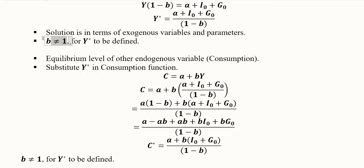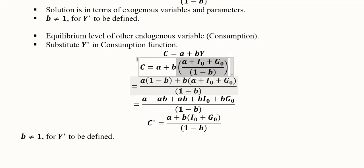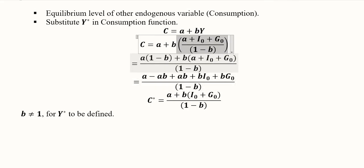Then we have the equilibrium level of the other endogenous variable, consumption, and we have to find out C as well. Simply by putting the value of Y* here we will get the value of C*. Now again simplification is done - you can pause the video and see that this is LCM and after that there is cancellation of some terms.